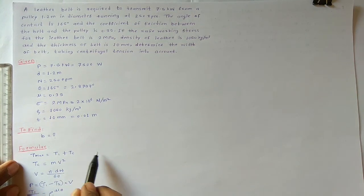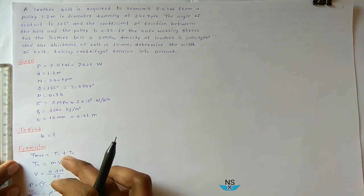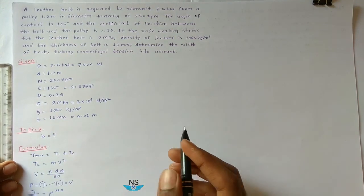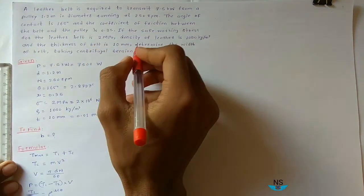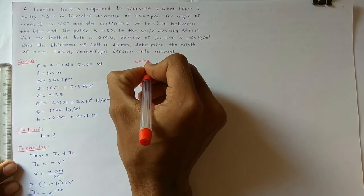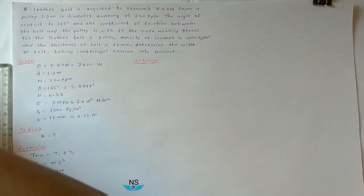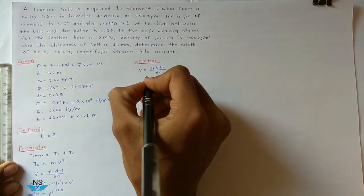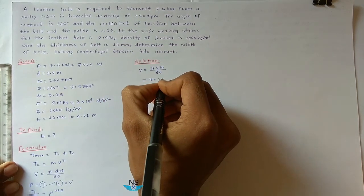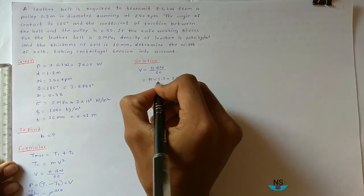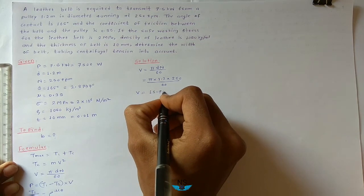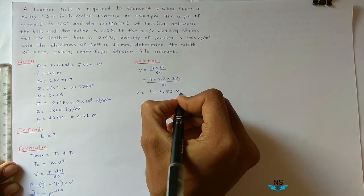From the T max equations we will calculate T max in terms of B, and after equating the two equations we get the value of width of belt. Now for the solution, first find velocity: V is equal to pi times d times n divided by 60, which is pi times 1.2 times 250 divided by 60, giving V equal to 15.7079 meters per second.